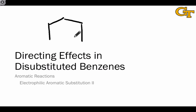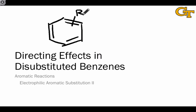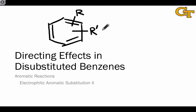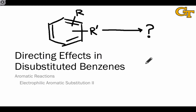In the last video, we looked at electrophilic aromatic substitutions of monosubstituted benzenes. If we want to synthesize a product containing three or more substituents located on an aromatic ring, however, we need to worry about directing effects in disubstituted benzenes, which already contain two R groups — possibly the same, possibly different — connected to an aromatic ring. The question here again is about site selectivity: how will the R groups direct substitution to particular positions within the aromatic ring? Some of these cases are simpler than others, and we're going to look at both simple and complex cases in this video.